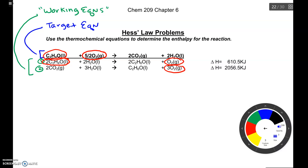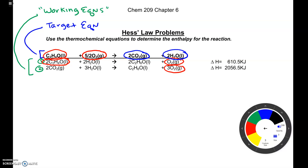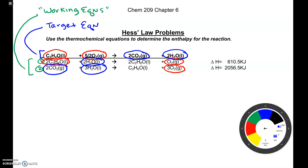I'm going to do the same thing for the products of my target equation, circling them in blue. I have two products: carbon dioxide and two moles of water. Carbon dioxide shows up in one spot — in equation 2 — and water shows up in two spots. Anything I didn't circle represents a reaction intermediate, something that needs to cancel out when I add equations 1 and 2 so it doesn't appear in the target equation.